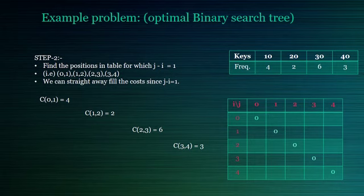We can straight away fill the costs since j minus i equal to 1. The costs of these positions are frequencies corresponding to it. Because j minus i equal to 1 and we consider only a single node, we can straight away fill the costs.